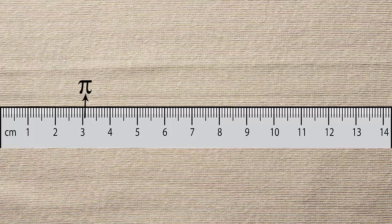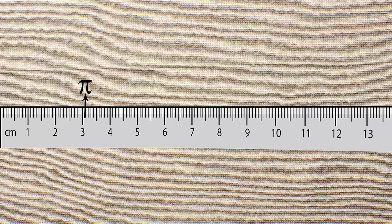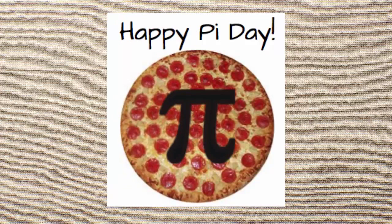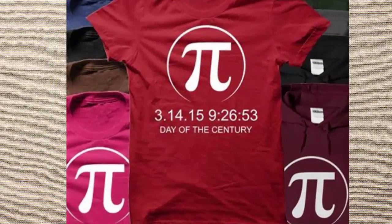In other words, the circle's circumference will be a little bit more than 3 times of its diameter. As the first three digits of this constant resemble March 14th, this day is celebrated as International Pi Day. One more interesting thing is that this year's Pi Day consists of the first five digits of the π constant, which repeats only once in 100 years.